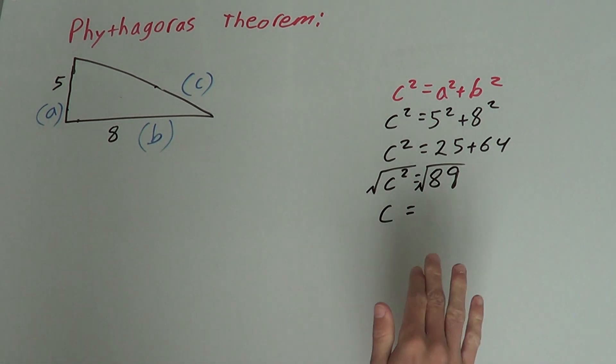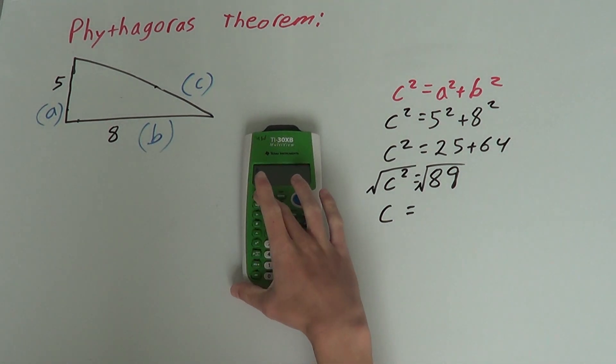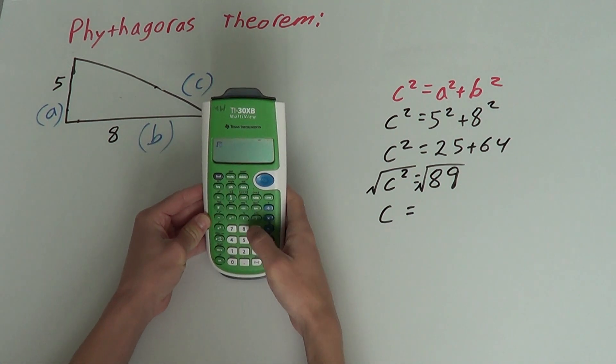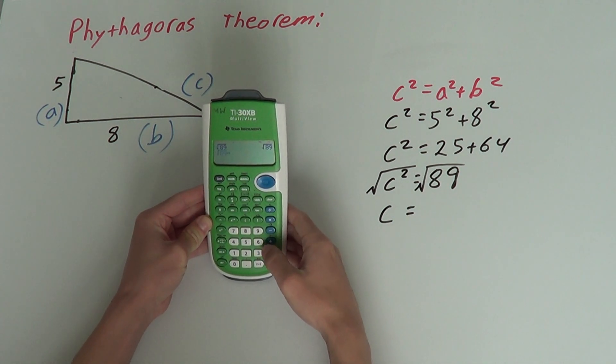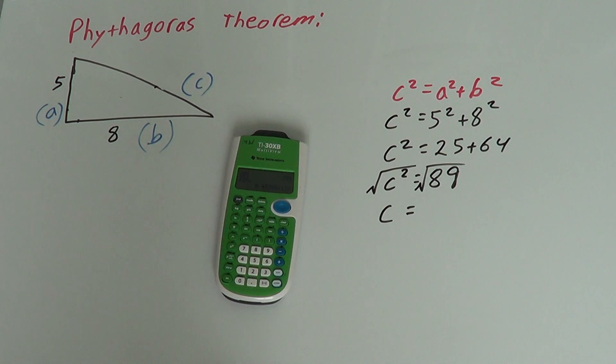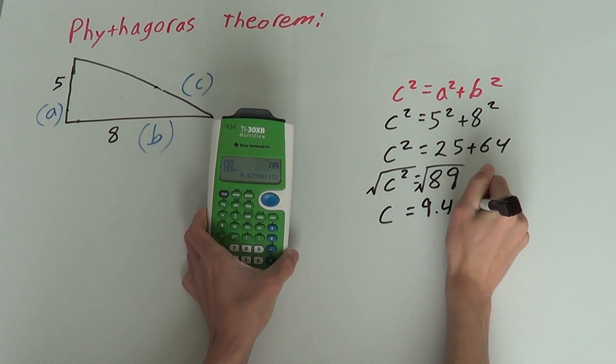So, c equals, but wait, this will often happen. What's the square root of eighty-nine? Eighty-nine is not a perfect square, so it will be a decimal. When this happens, you need to grab your calculator and type it in yourself. So, you get the square root of eighty-nine, get it to a decimal, and this says the answer is nine point four three.